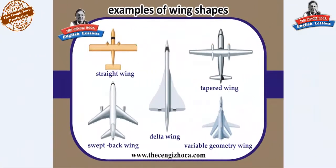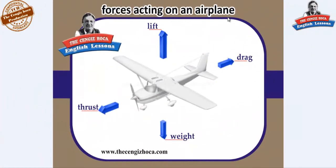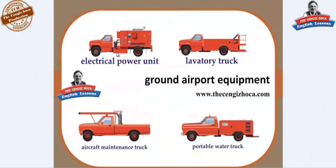Examples of wing shapes: straight wing, swept back wing, delta wing, variable geometry wing, and a tapered wing. Forces acting on an aeroplane: lift, thrust, weight, drag.